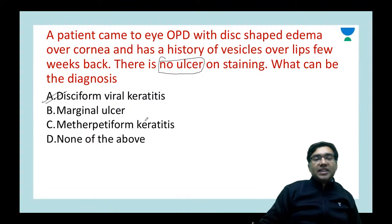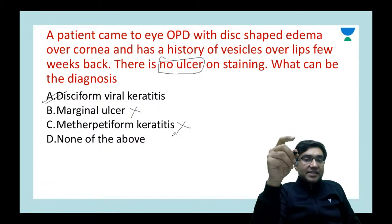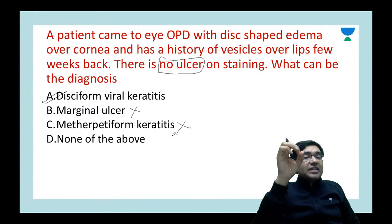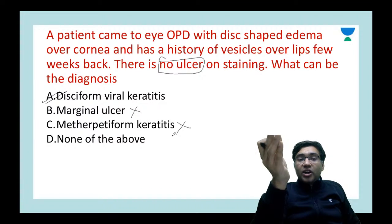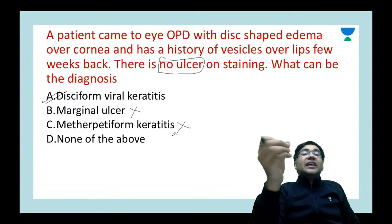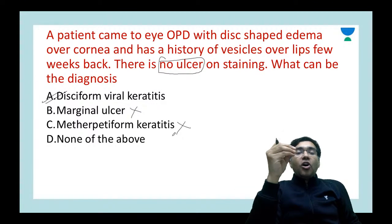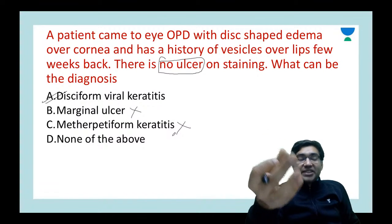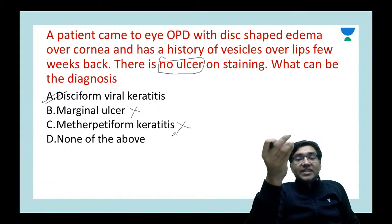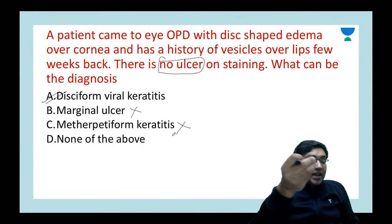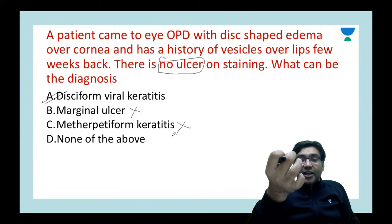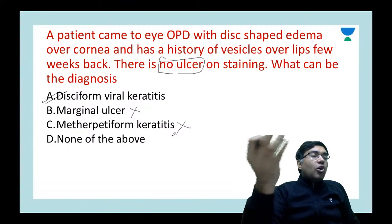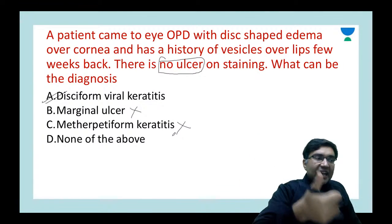Marginal ulcer and metaherpetic keratitis always have an ulcer. Marginal ulcer has the ulcer near the periphery of the cornea. Metaherpetic keratitis is due to toxicity of antiviral drugs like acyclovir or ganciclovir ointment, which are very toxic to the cornea and can cause epithelial defects. So the answer is A: disciform viral keratitis, not B or C.